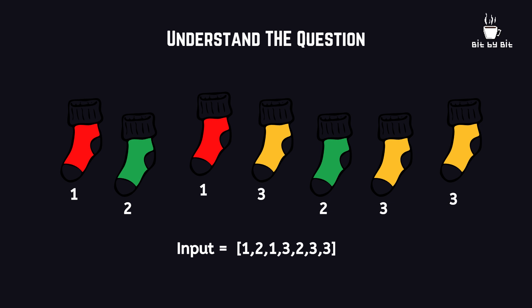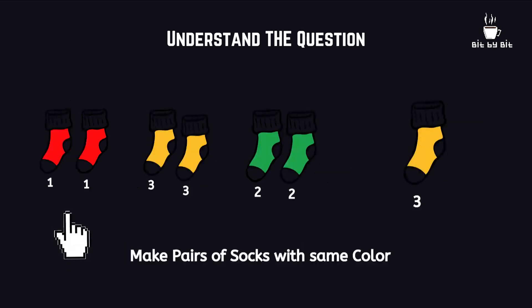One indicates red socks and two indicates green socks. Similarly, we have a list of socks passed as an input.